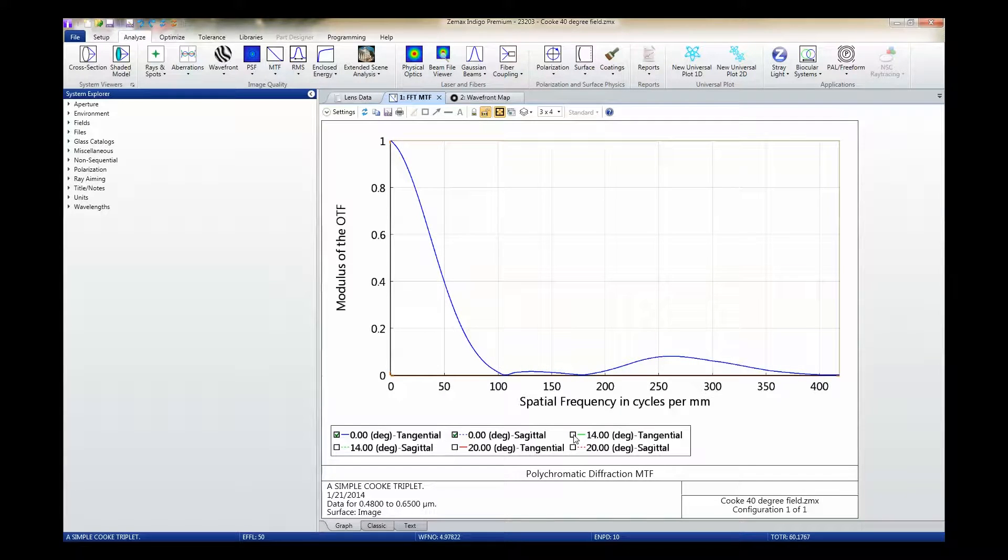Data may then be added back to the plot by rechecking those boxes. Quantitative information about each of the curves in the plot may be obtained using the active cursor, as shown here.